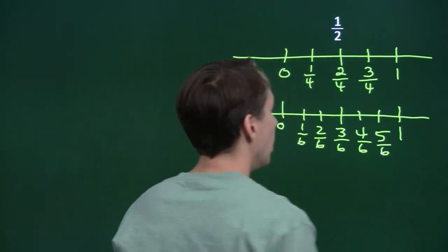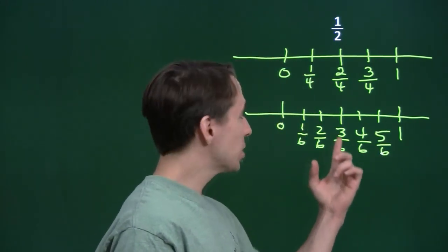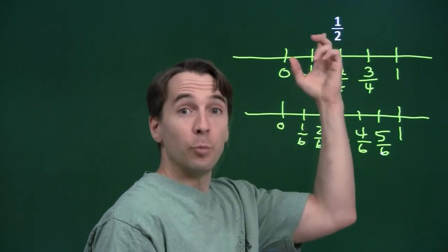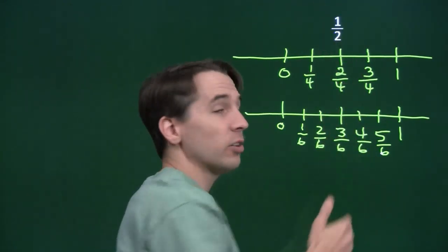And we see that, sure enough, 3 over 6 ends up in the same spot on the number line as 2 over 4 and 1 over 2. So it looks like these three are all the same.